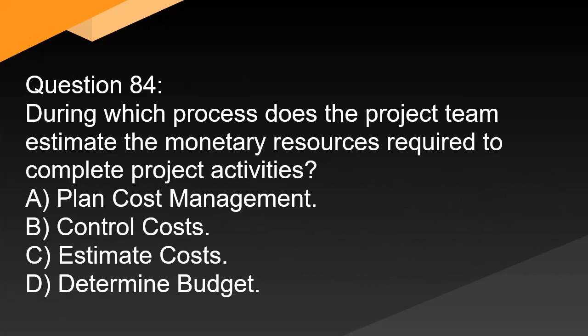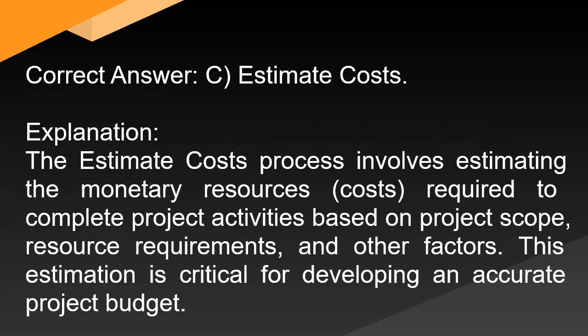Question 84: During which process does the project team estimate the monetary resources required to complete project activities? A. Plan cost management. B. Control costs. C. Estimate costs. D. Determine budget. Correct answer: C. Estimate costs. Explanation: The estimate costs process involves estimating the monetary resources (costs) required to complete project activities based on project scope, resource requirements, and other factors. This estimation is critical for developing an accurate project budget.